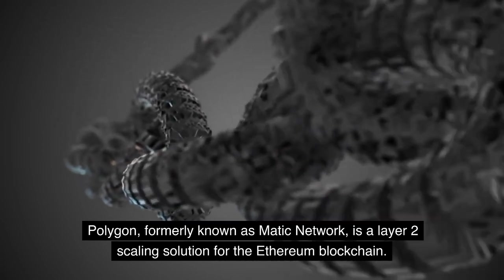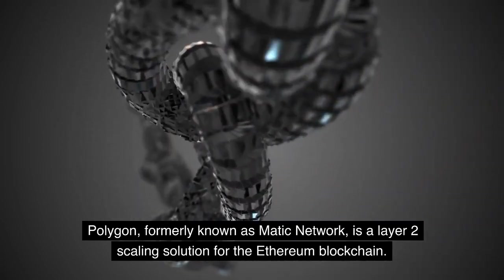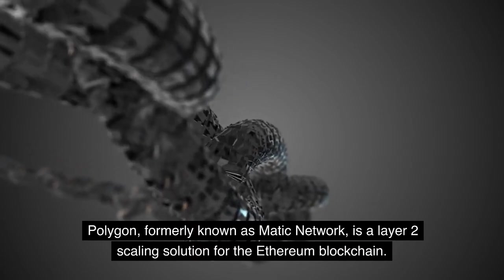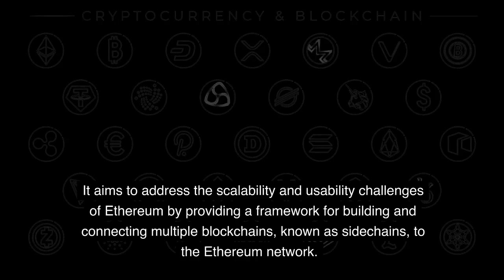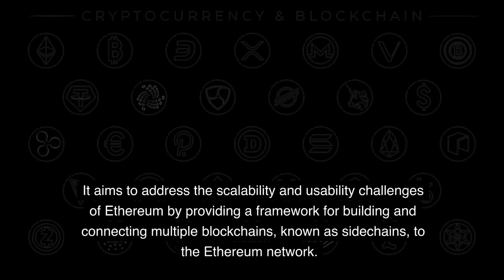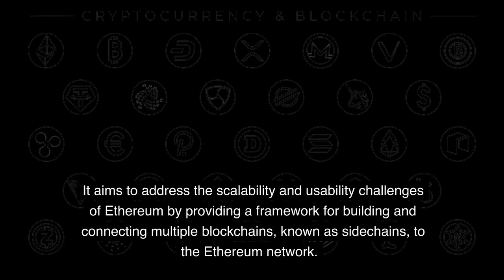Polygon, formerly known as Matic Network, is a Layer 2 scaling solution for the Ethereum blockchain. It aims to address the scalability and usability challenges of Ethereum by providing a framework for building and connecting multiple blockchains, known as side chains, to the Ethereum network.